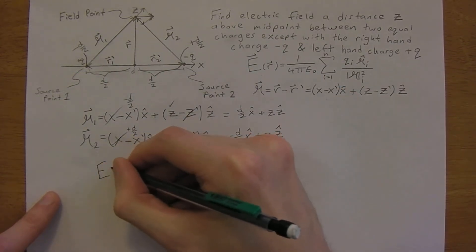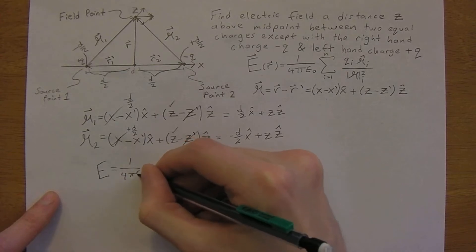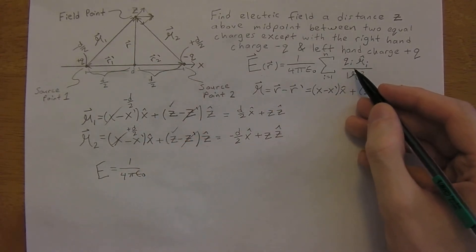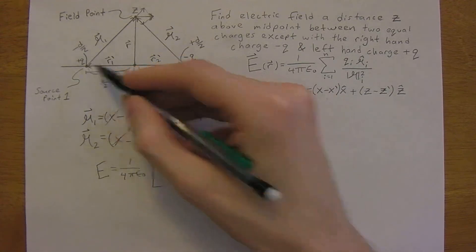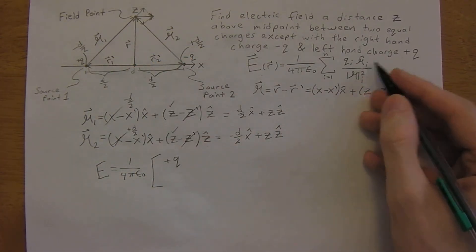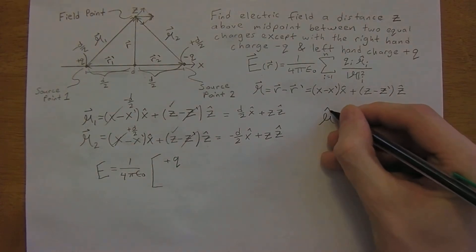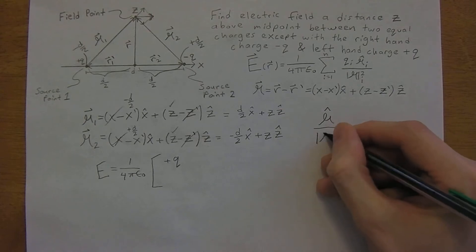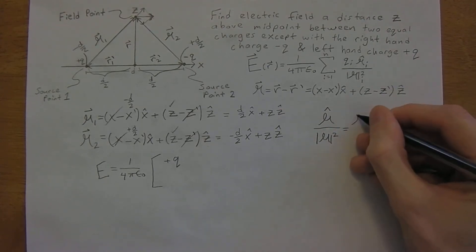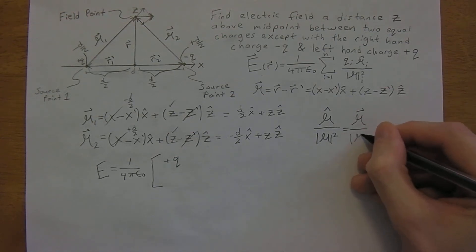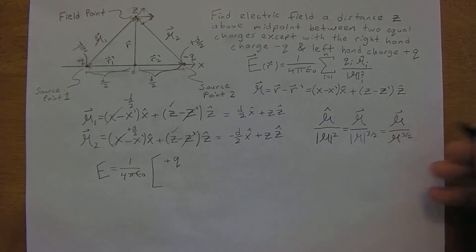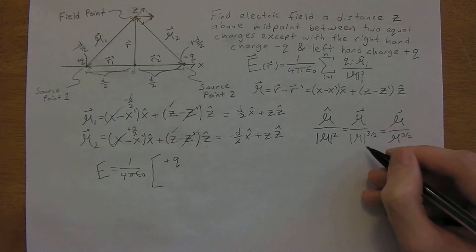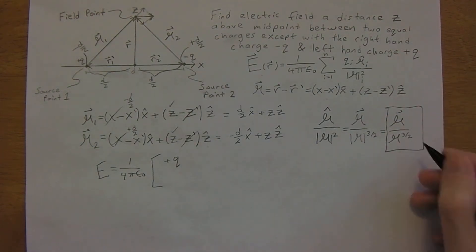So now we just use superposition. E is equal to 1 over 4 pi epsilon naught, and we're going to add these two. So we have a positive q working with source point 1. Then, r hat divided by the magnitude of r squared is the same as the vector of script r divided by the magnitude to the 3 halves power. Which you can write in easier notation to the 3 halves. I know you can work with this, so just use this equation here.